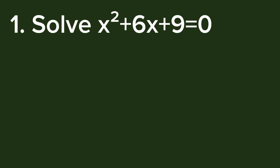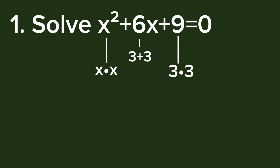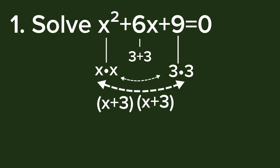Solve number one: x² + 6x + 9 = 0. Let's start by factoring x² — we have x times x. Factor 9 — we have 3 times 3, and 3 plus 3 is equal to 6, which is the middle term coefficient. We make sure the factors of 9 add up to 6. So our factors are (x + 3) and (x + 3) — we have a square of a binomial.